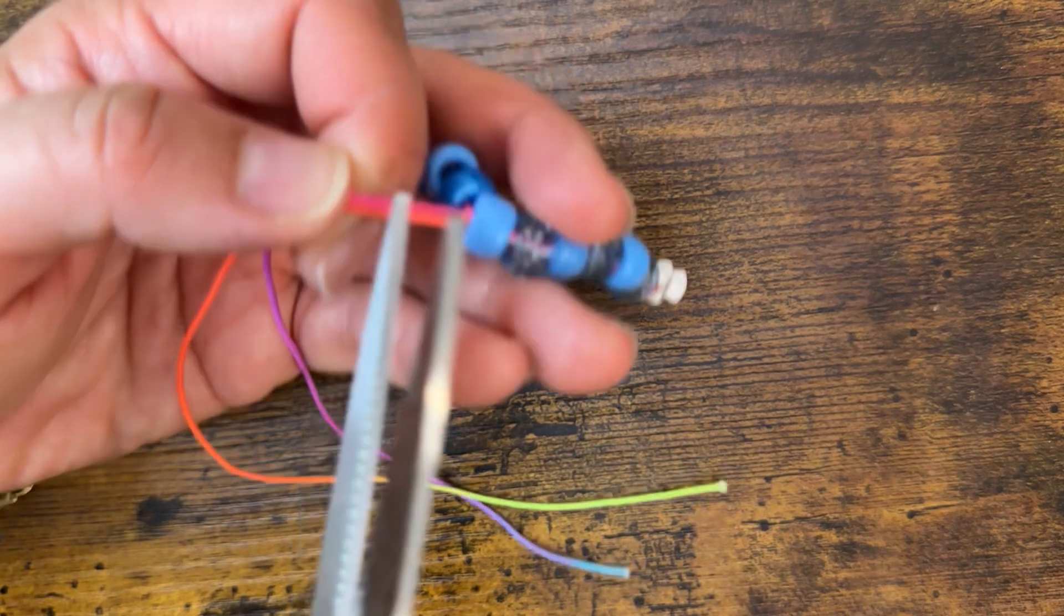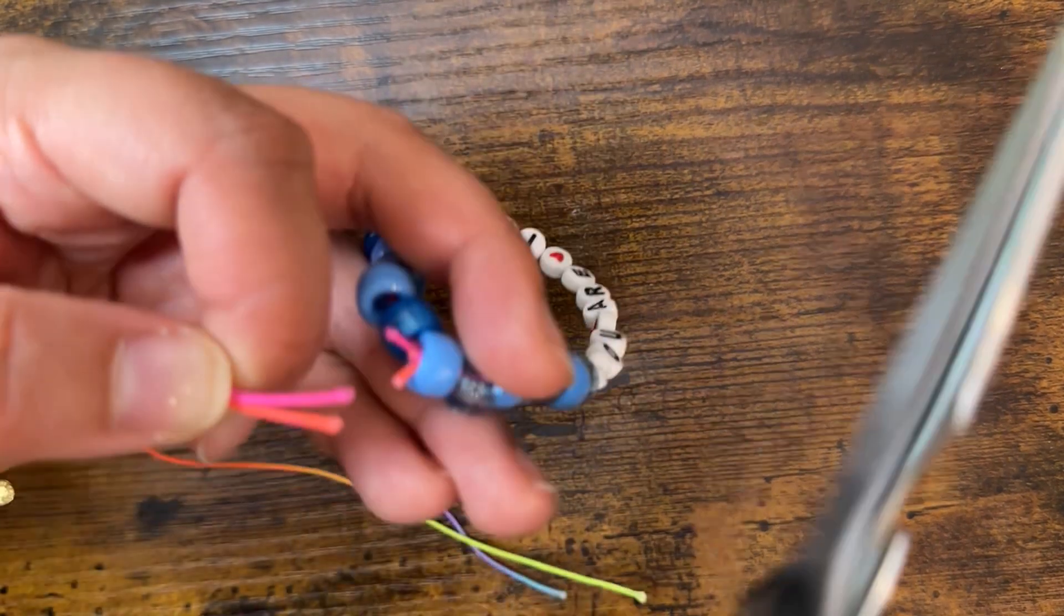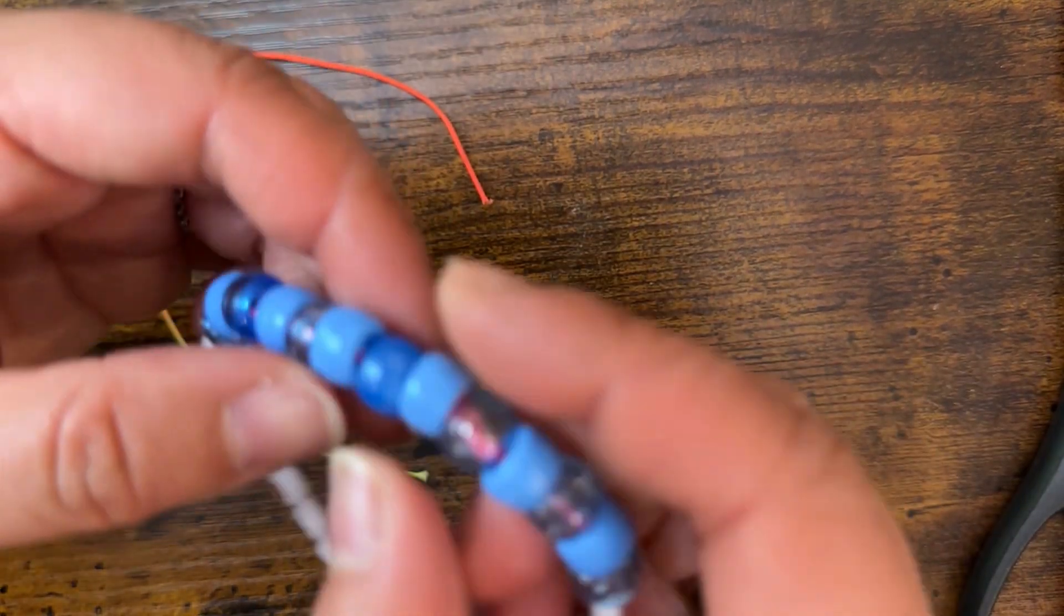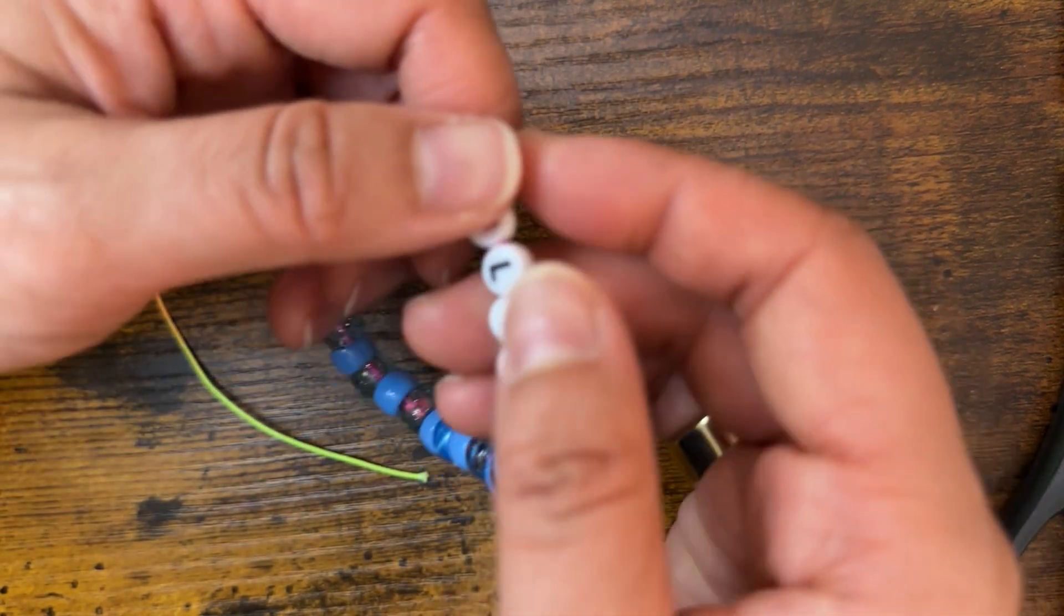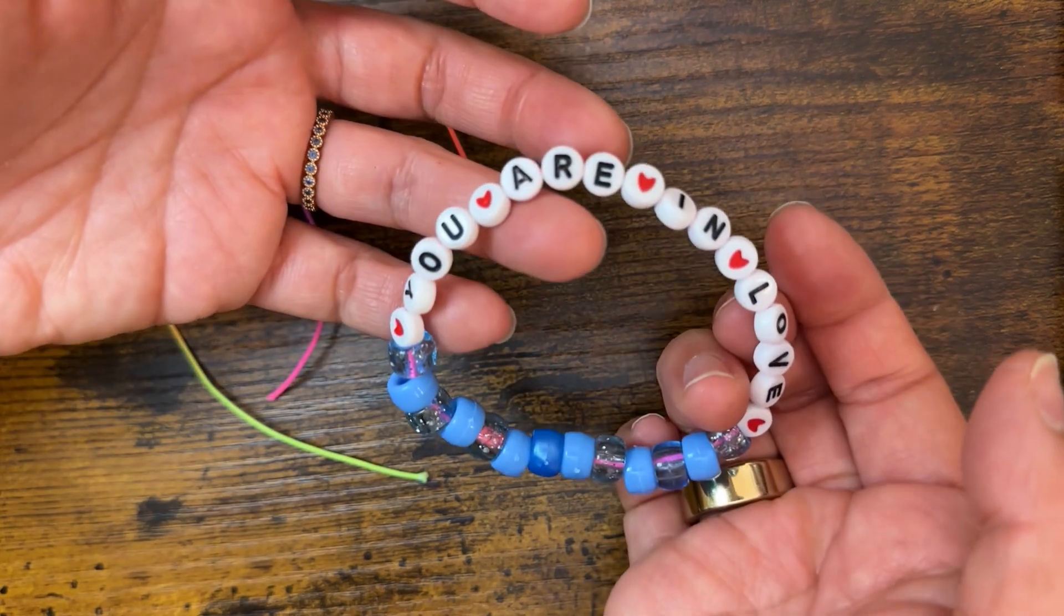Then I'm just going to cut it really close here, as you can see, with a pair of scissors. The reason why I like using these beads is you can hide that little piece in there, and it's just hidden inside. That is your bracelet. You are in love. Everybody, go to the show and have the absolute best time.